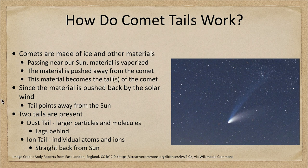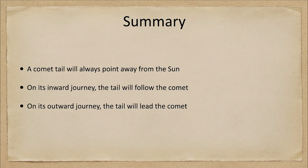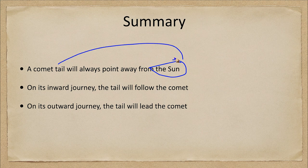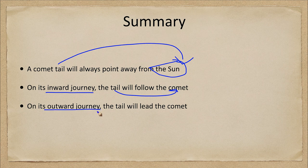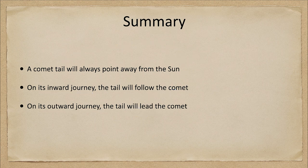Let's finish up with our summary. A comet tail will always point away from the Sun, so the comet tail does not lag behind the comet. On the inward journey it would be as you might expect — the tail follows the comet. However, when the comet heads back out to the outer solar system, the tail will actually lead the comet and go before the rest of the comet. That concludes this discussion on comet tails and the misconception that comet tails always lag behind the comet.